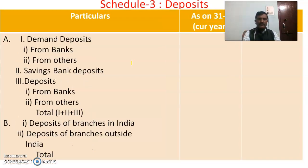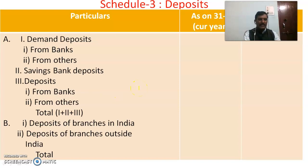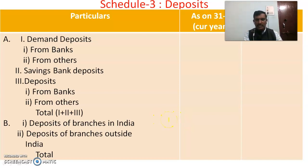Schedule 3 covers Deposits, where various types of deposits are to be taken into consideration. These include demand deposits from banks and from others, savings bank deposits, and term deposits from other banks and from others. The total of all these is taken, and then deposits of branches in India and deposits of branches outside India are shown, and the total is taken.